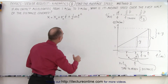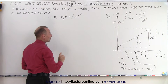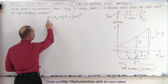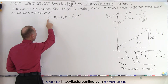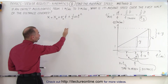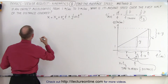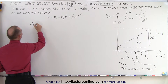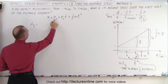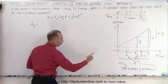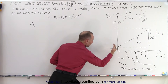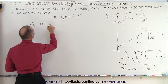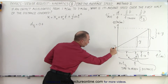Using this equation, we can apply it twice. First, we're going to calculate the distance to the halfway point, and then we're going to calculate the total distance traveled.